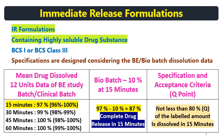In the table you can see the mean drug dissolved or mean drug released data on 12 units for the BE study batch or clinical batch. There is guidance for deriving the dissolution specifications from the biobatch. Consider a biobatch that is passing the bioequivalence study or clinical study, and that batch is showing dissolution ranges as given here — at 15 minutes, 97%. These are hypothetical examples for easy understanding.